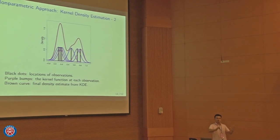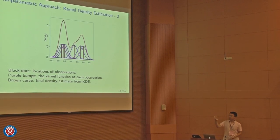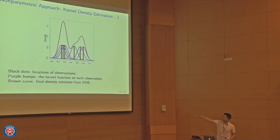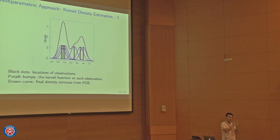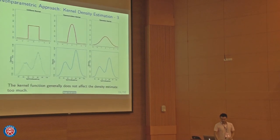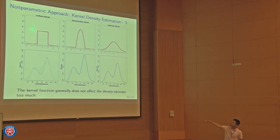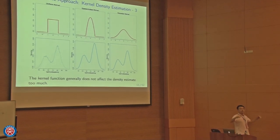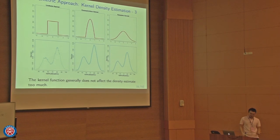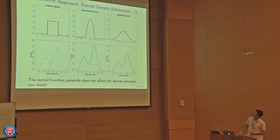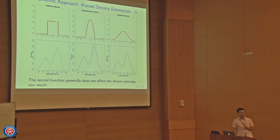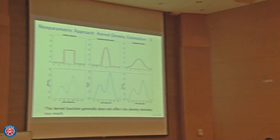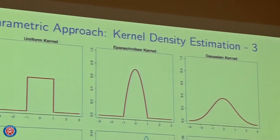The smoothing bandwidth h determines the width of each bump. If h is small, we smooth only locally; if h is large, we smooth over a wider region. Common kernel choices include the uniform kernel (a box function giving equal weight within radius h), the Epanechnikov kernel (which has mathematical optimality despite its hard-to-pronounce name), and the Gaussian kernel, which is smooth, infinitely differentiable, and has many beautiful properties.